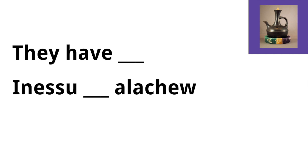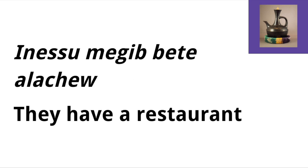Now for 'they have' in Amharic, we have 'anasu alo alacho.' So for our example we want to say 'they have a restaurant.' That in Amharic becomes 'anasu mgibet alo alacho,' where 'mgibet' in Amharic means restaurant.